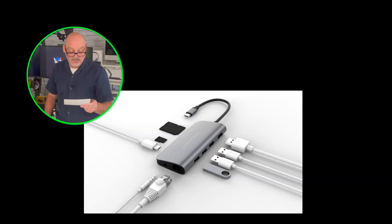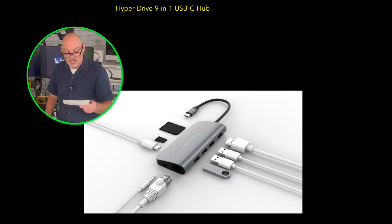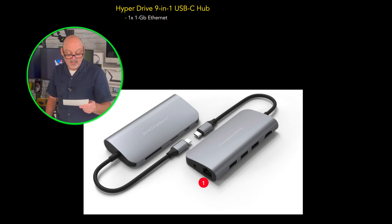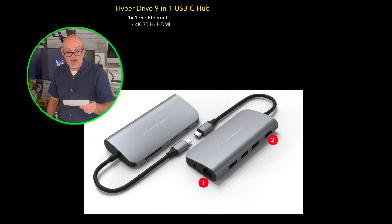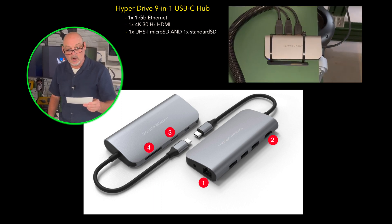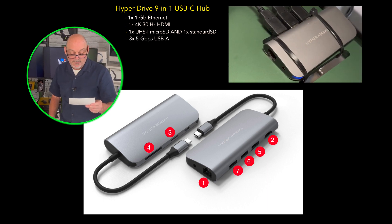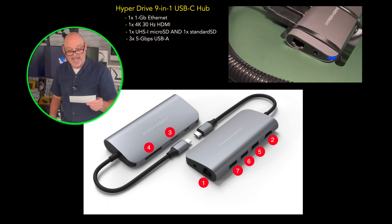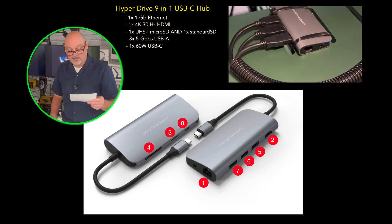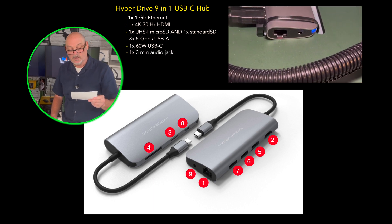Question 3B: what dongle or hub are you using? The dongle we're using is the Hyperdrive 9-in-1 USB-C hub. It has a gigabit ethernet port, a single 4K 30Hz HDMI port, a UHS-1 microSD card slot, three 5-gigabit-per-second USB-A ports, a single 60-watt USB-C port, and a 3.5mm audio jack. Hyperdrive also makes one that's about twice as expensive with a lot more ports, if you need something with more connectivity.